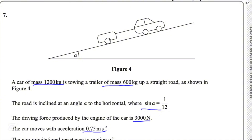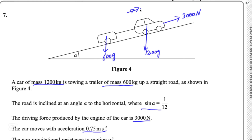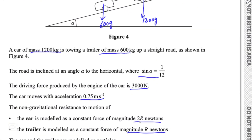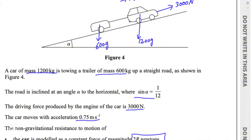Let me draw all forces acting on the car and trailer. The weight of the car is 1200G, drawn vertically downwards. The driving force of 3000 N acts up the plane. Acceleration is 0.75 m/s² up the slope. The non-gravitational resistance to the car is 2R N acting backward, and for the trailer, resistance is R N also acting backward.